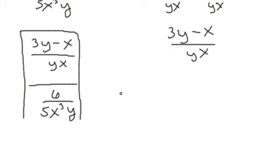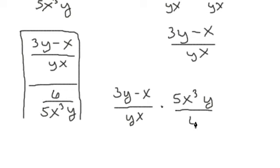So what we're going to do now is just rewrite the numerator: 3y minus x over yx. And of course we're going to bring this up, but remember we've got to flip this, so this becomes 5x cubed y over 6.